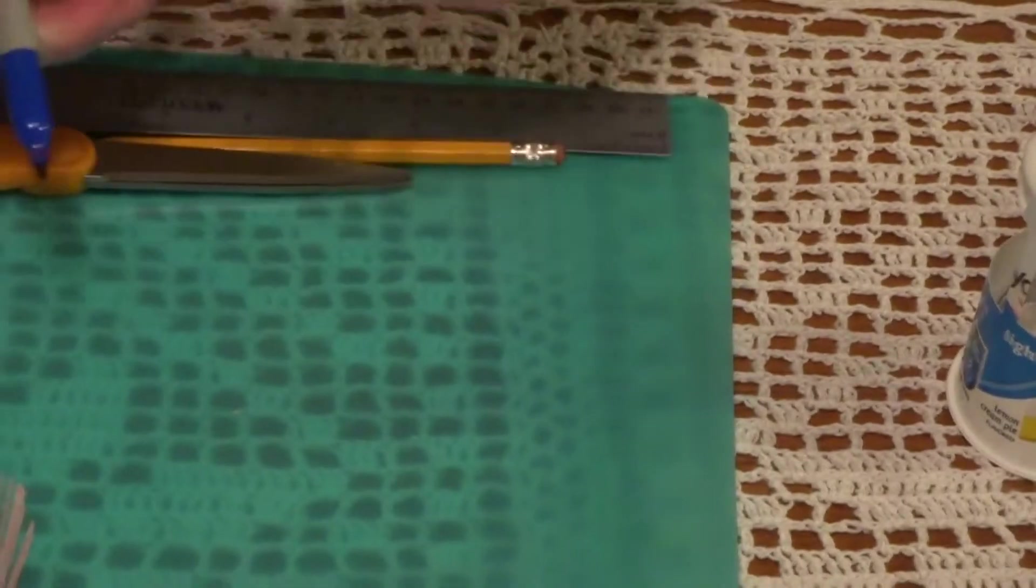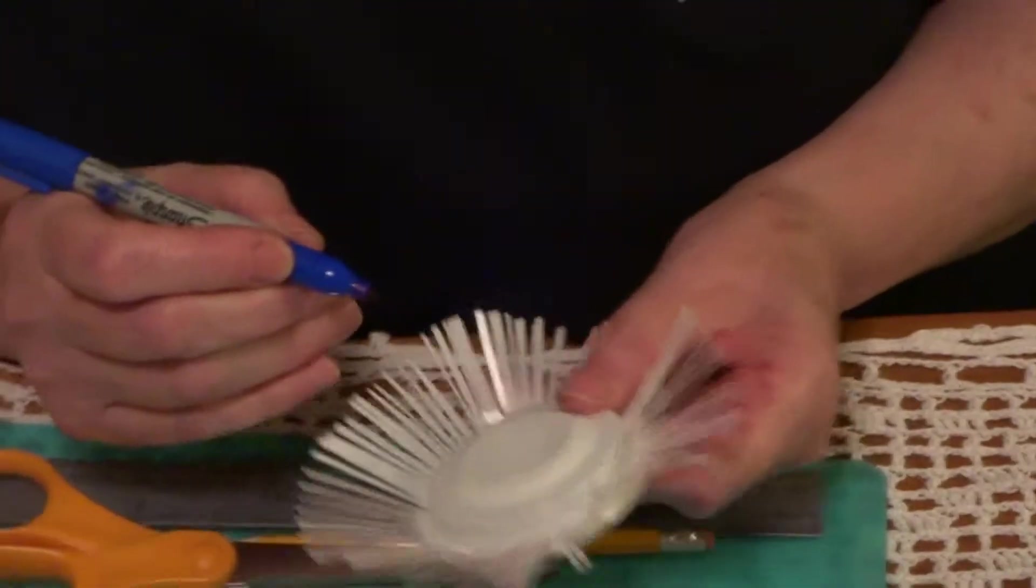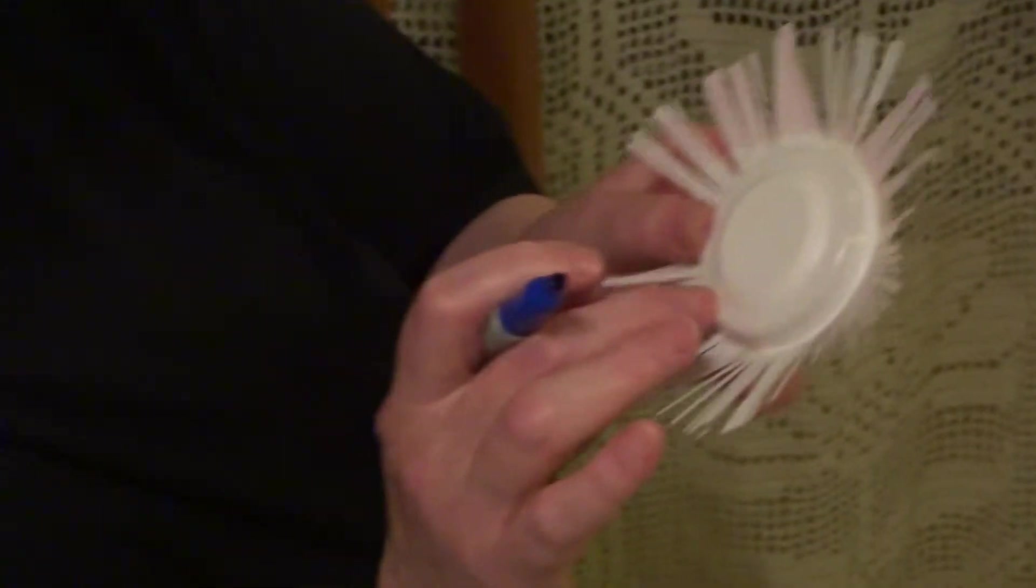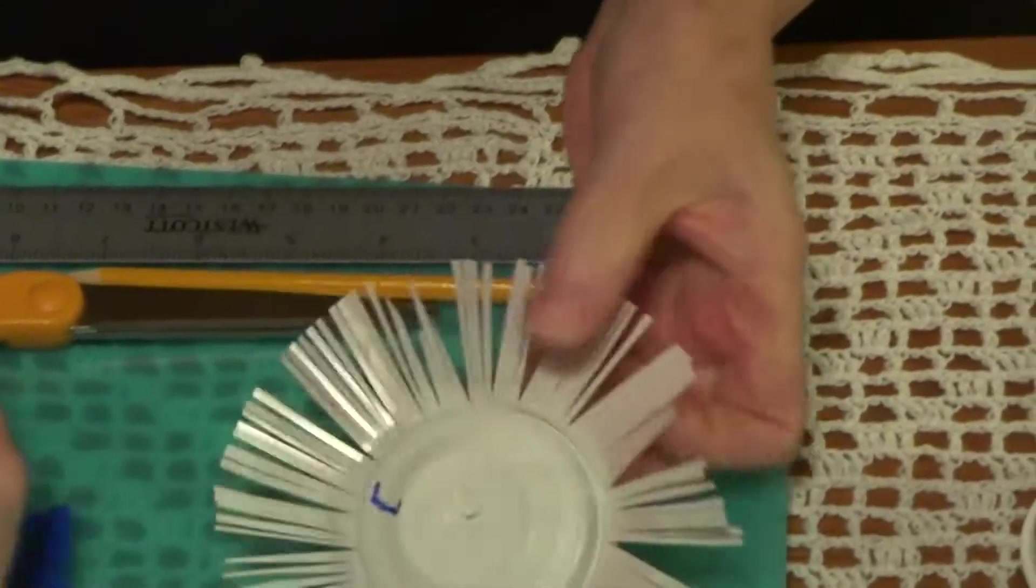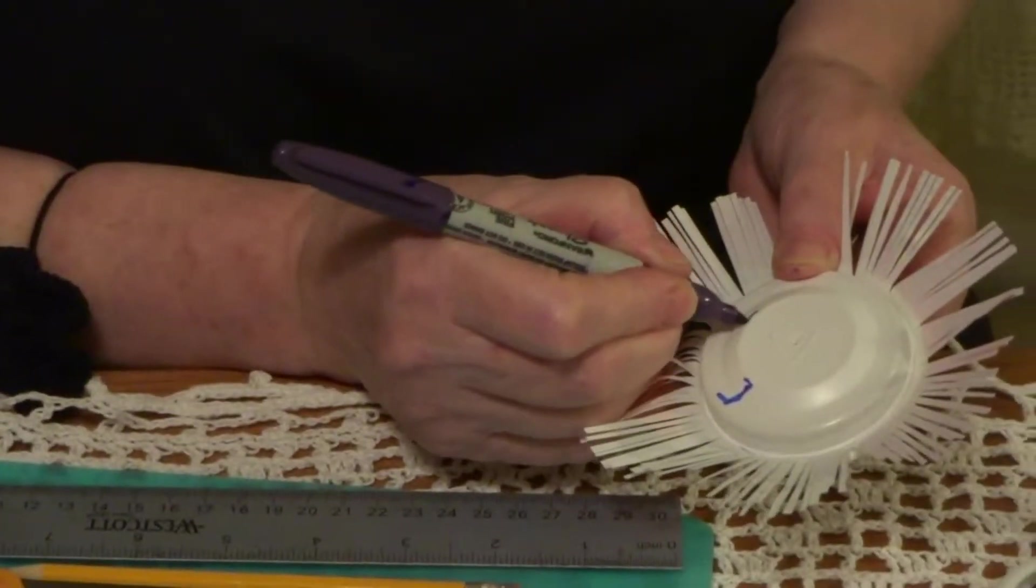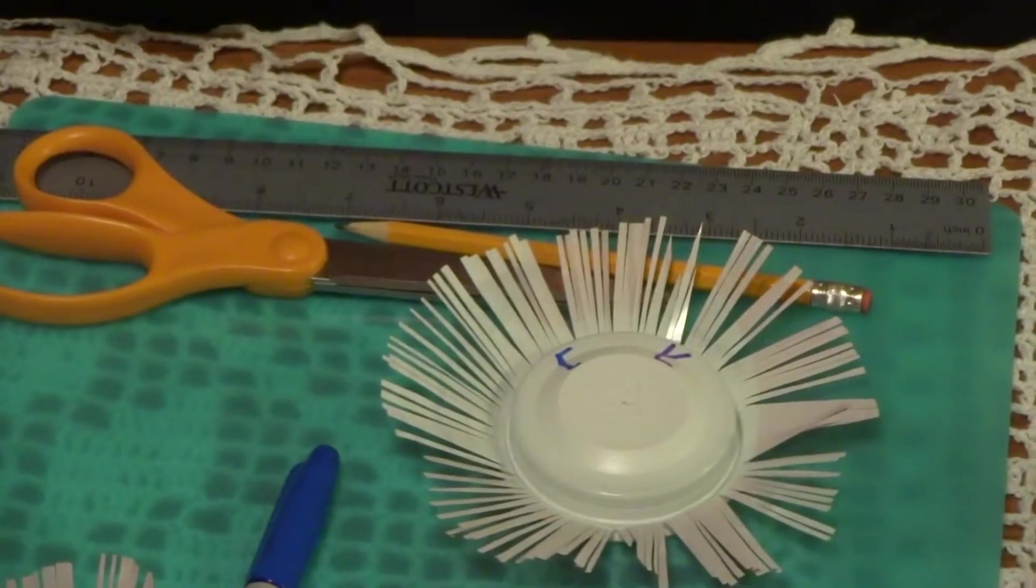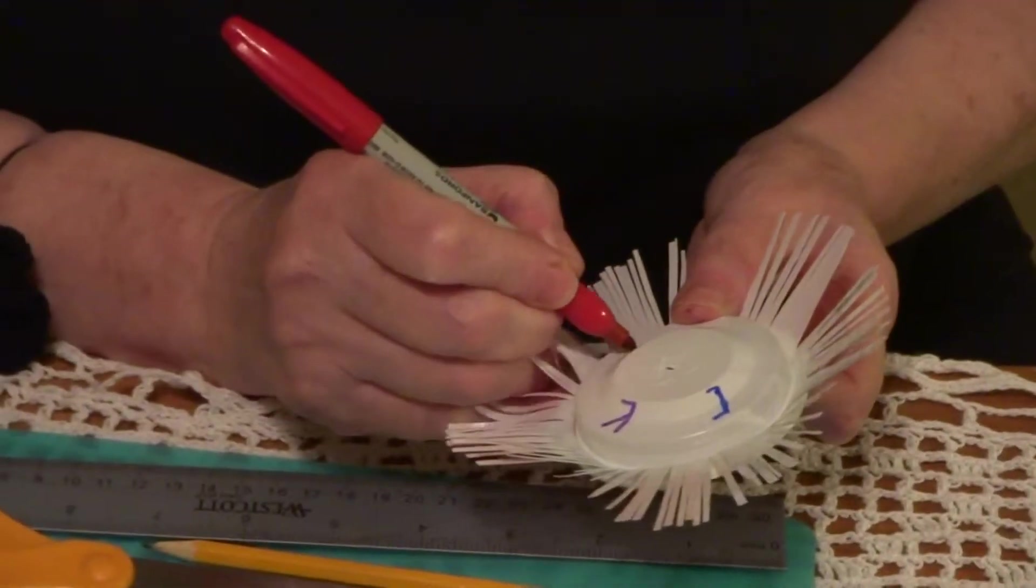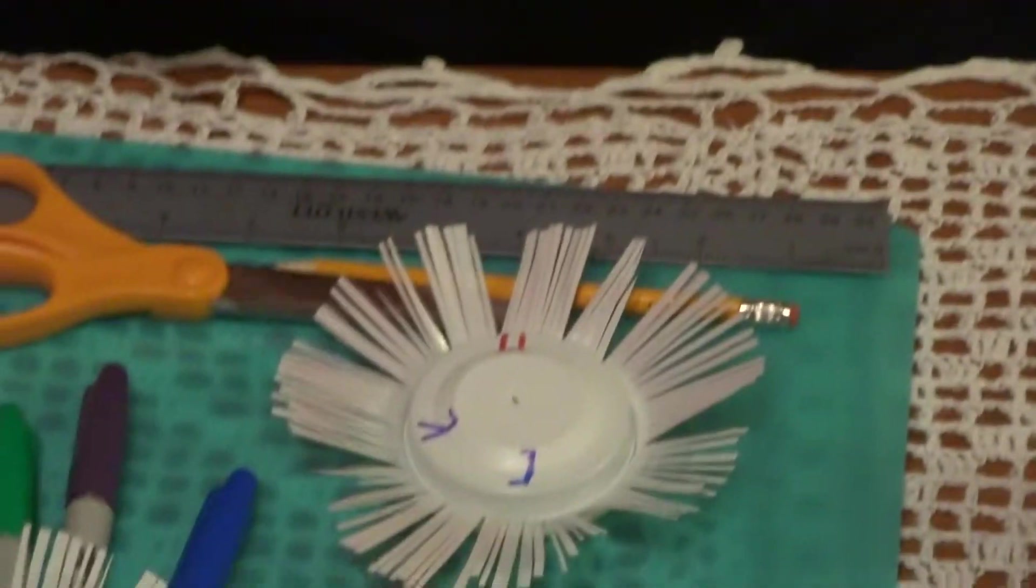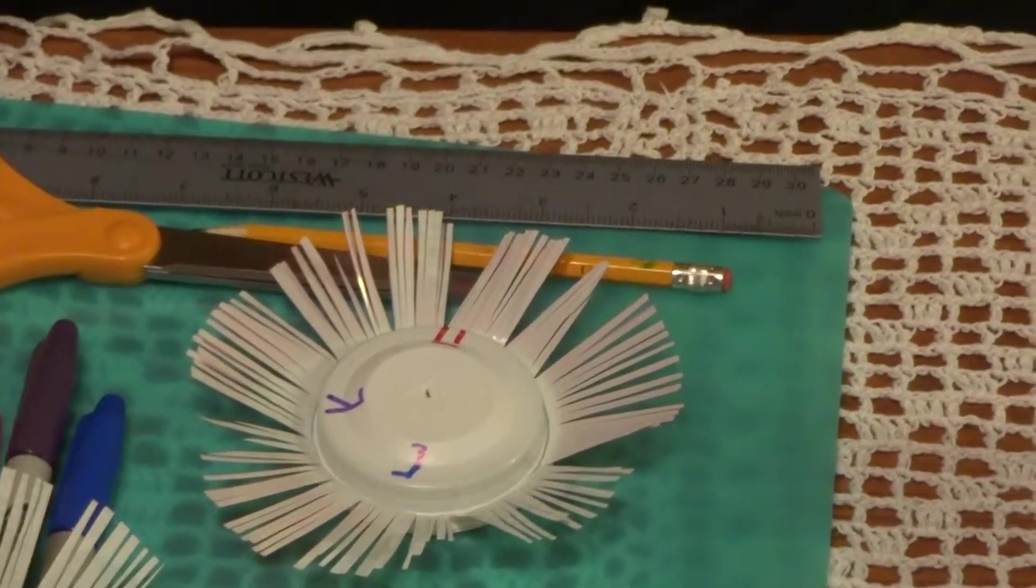Now, before I put the pencil in, I'm going to write the four letters for Hanukkah. And you start. And you see here, there's a little bit here. You can write it. Nes. Then you write, I took the purple, the letter Gimel, Gadol. And then, the letter H, Haya. And the letter, the color green, Sham, Shin.